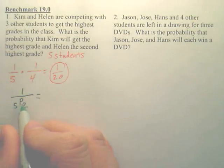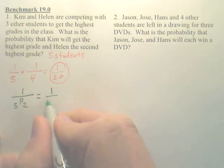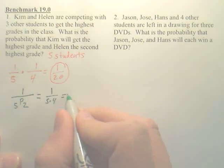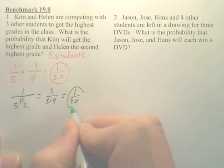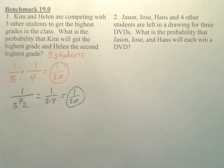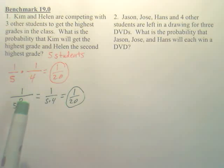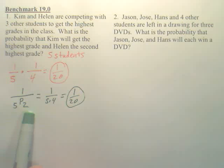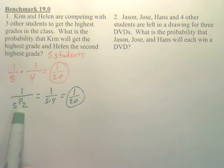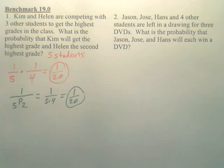What's 5P2? Isn't that 5 times 4? They both get the same answer. You could either think of two events, or think of it as: if I choose two people out of five and then pick the one order I want, that gives the same result. It's your choice of how to do it.